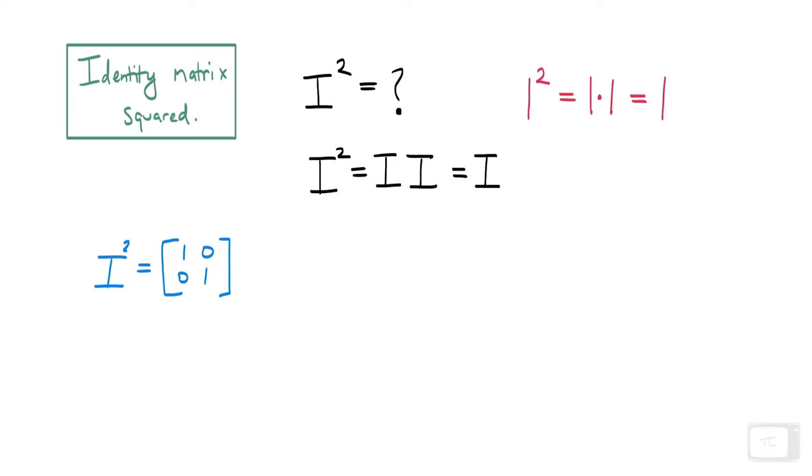Okay, I squared, that's going to be I times I, like so. So how do we do this? We work across the row and down the column. So here, we're going to have 1 times 1 is 1 plus 0 times 0 is 0.